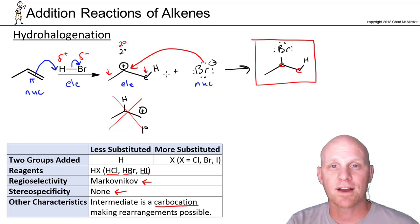But again, anytime you do any of these reactions that involve a carbocation intermediate, there's three of them, you should always draw out that carbocation and consider, is a rearrangement likely?